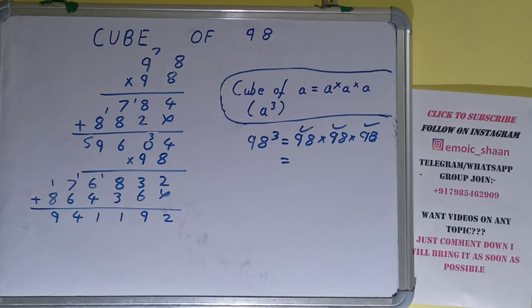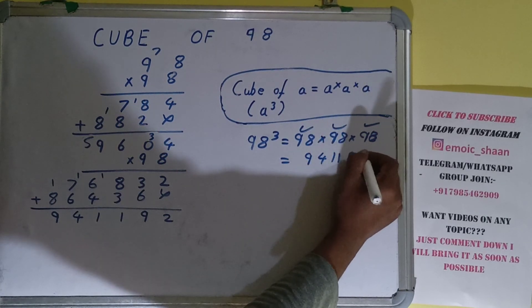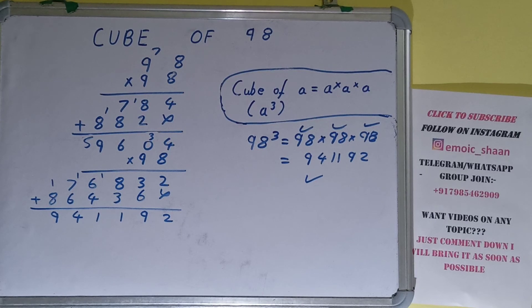I hope the multiplication procedure was very simple to you. If you have any confusion you can comment down and I'll clear your doubt. So your answer is 941192. That will be the cube of the number 98.